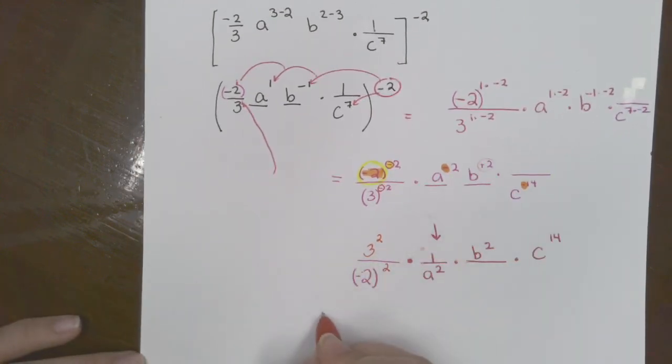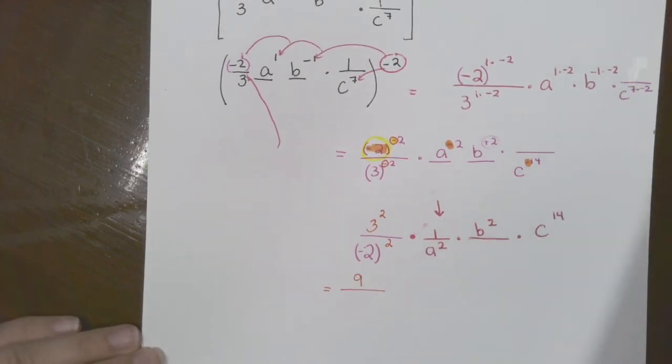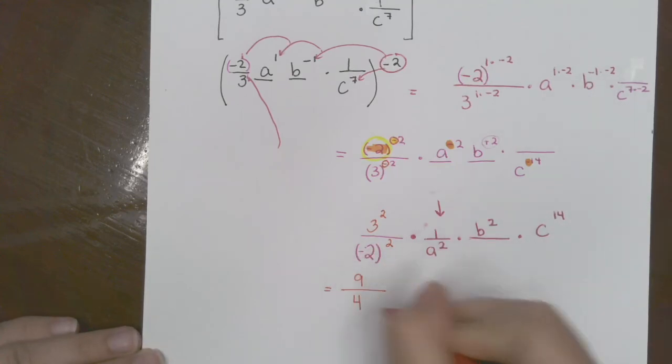What is 3 squared, everyone? Oh, I'll try again. 9. What is negative 2 squared? 4. Good. Okay.